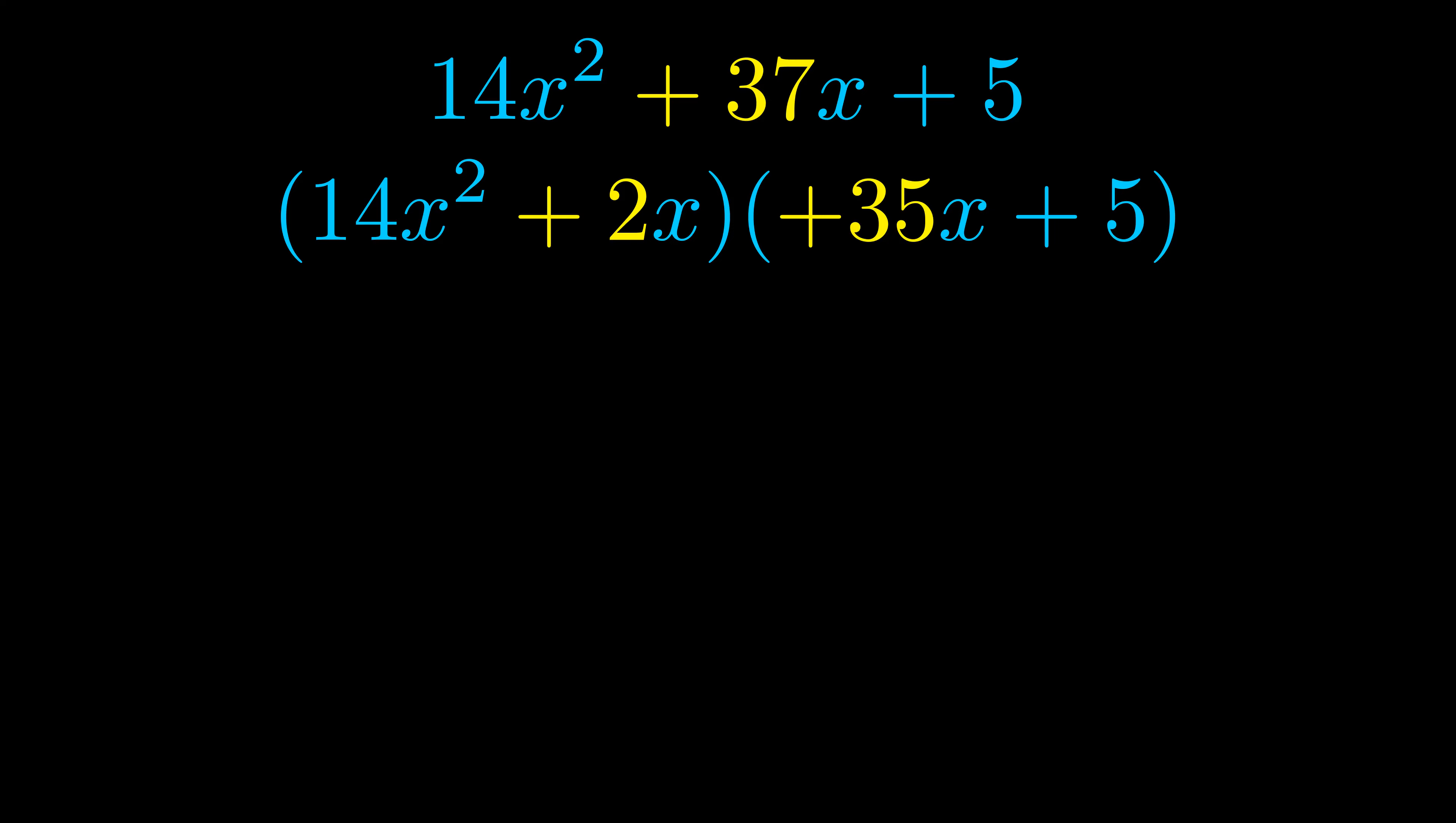Once we've done this we go ahead and put parentheses around the first term and the last term. And we do that so that we can take the greatest common factor out of both terms. We can see the greatest common factor is now outside in green.